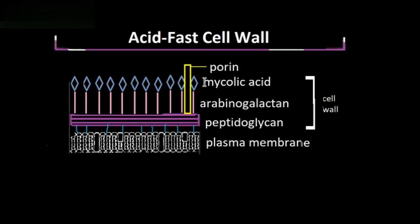It also makes the bacteria resistant to things like antibiotics and disinfectants. Before ending this video, I want to quickly talk about some bacteria that don't have a cell wall. For a bacteria that doesn't have a cell wall, this means it won't have a distinct shape. The lack of a cell wall also tells us that the bacteria is found in isotonic environments — a cell wall isn't needed because the movement of water in and out of the cell is equal.